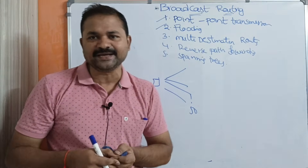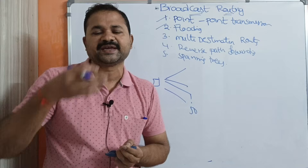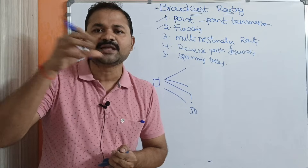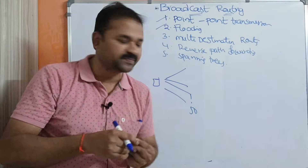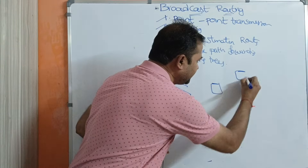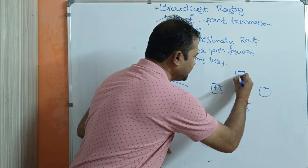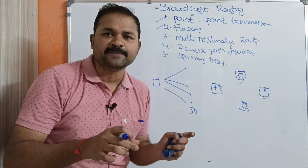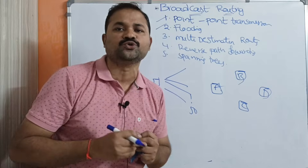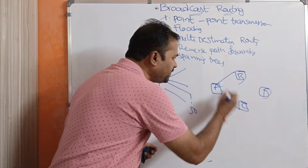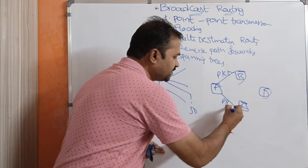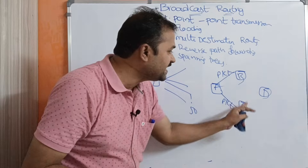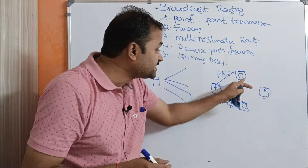Flooding means sending a packet to its neighboring routers except from the router the packet arrived on. For example, if we have a graph with four routers A, B, C, and D — A will send the packet to B and C. Next, B will send packets to its neighboring routers D and C, but it does not transmit the packet back to A, because the packet arrived from A.